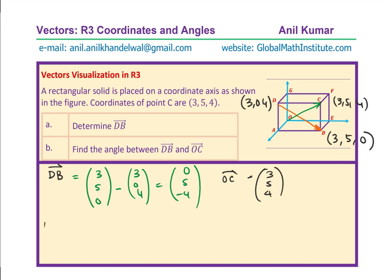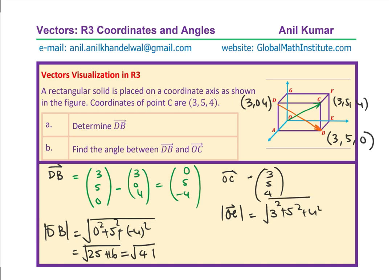Let us also find the magnitude of DB, which will be square root of 0 square plus 5 square plus minus 4 square. So, that is 25 plus 16, which is square root of 41. And magnitude of OC is 3 square plus 5 square plus 4 square, which is 9 plus 25 plus 16. So when I add 9 to this, I get square root of 50, which we could write as 5 square root 2 also, if you want.